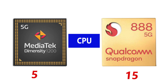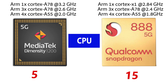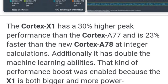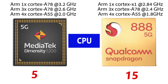On the CPU, both chipsets have a 3-cluster CPU configuration, while the Dimensity 1200 has a big core of Cortex-A78 running at 3 GHz frequency. The Snapdragon on the other hand is only clocked at 2.8 GHz frequency, but with better performance. Why? Because the Cortex-A1 is 23% faster than the Cortex-A78, making the Snapdragon the winner of this standpoint.